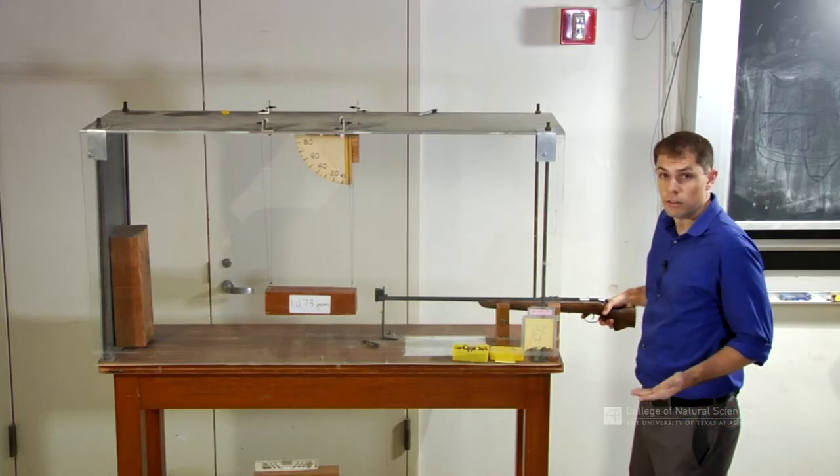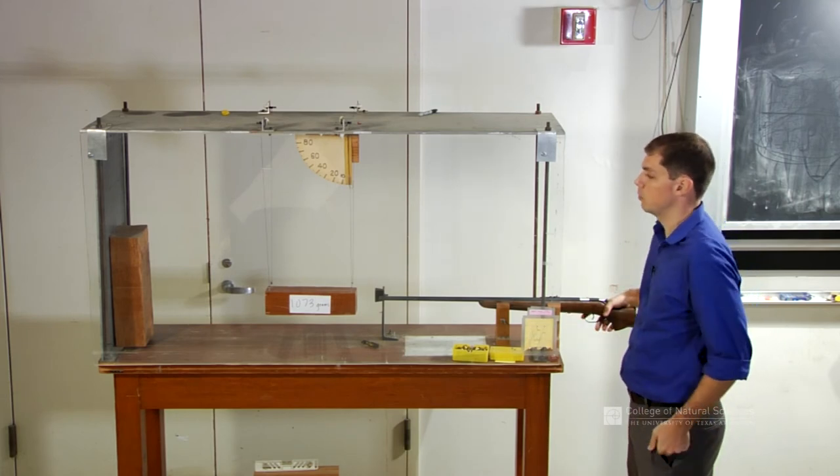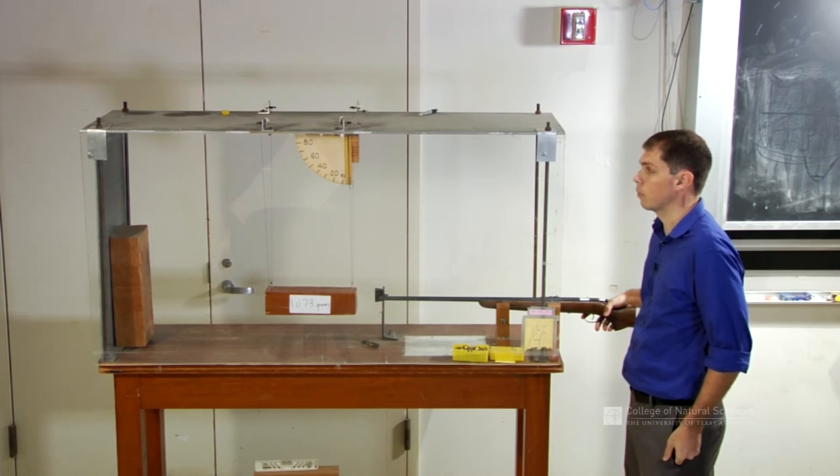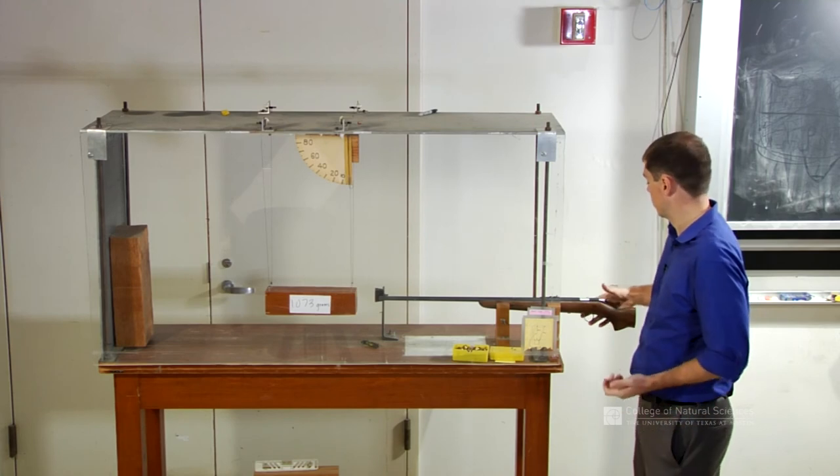So we have our gun loaded with a 2.55 gram bullet. We're about to shoot it into the 1,073 gram block that's hanging off of a pendulum that's 56 centimeters.